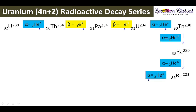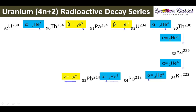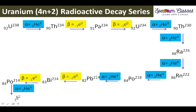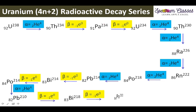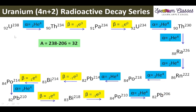In the next slide I am going to show you how to memorize this. This series has this many number of steps, and here is the end product — an isotope of lead, not the main element. Now we are going to calculate the number of alpha particles removed in this disintegration series.